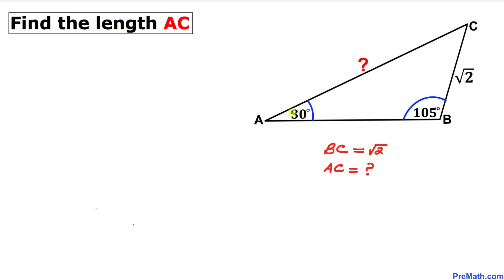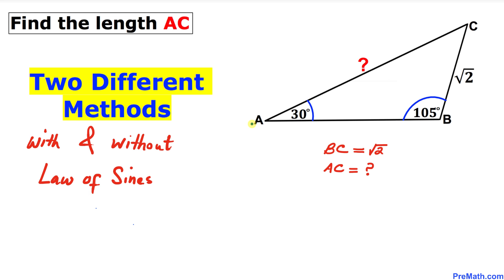Welcome to pre-math. In this video tutorial we have this scalene triangle ABC such that side length BC is square root of 2, angle A is 30 degrees, and angle B is 105 degrees. We are going to find the length of side AC. I will share two different approaches — one without and one with the law of sines.